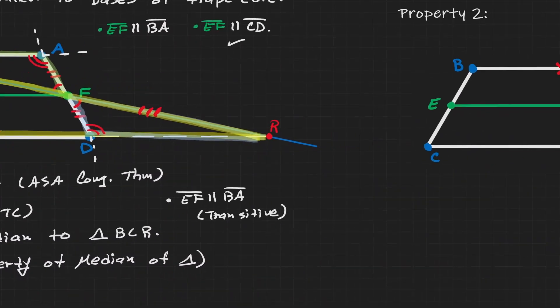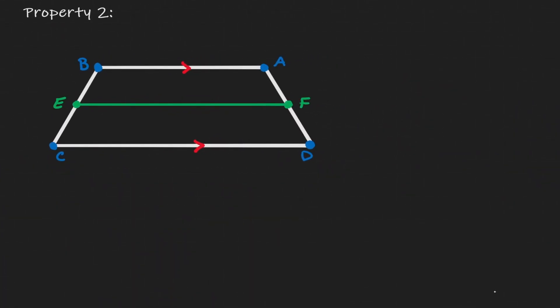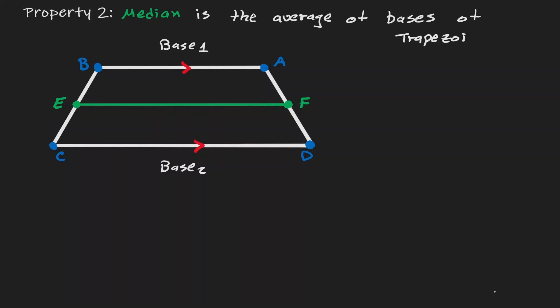Now let's take a look at the second property. Let's start by labeling our bases one more time. The second property says that the median EF is the average of the lengths of the bases of the trapezoid. In other words, the length of EF is equivalent to one half of the upper base plus the lower base.